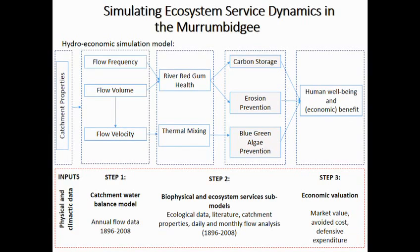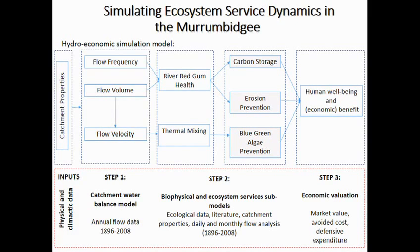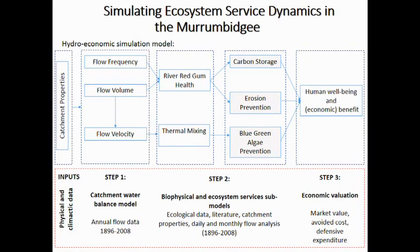We're also interested in blue-green algae prevention, which is a function of flow conditions — specifically flow velocity. Blue-green algae tends to form when there's very low or stagnant flow, high evaporation, high heat, and lots of thermal stratification. With these three ecosystem services, we end up being able to value them in terms of human well-being and economic value.